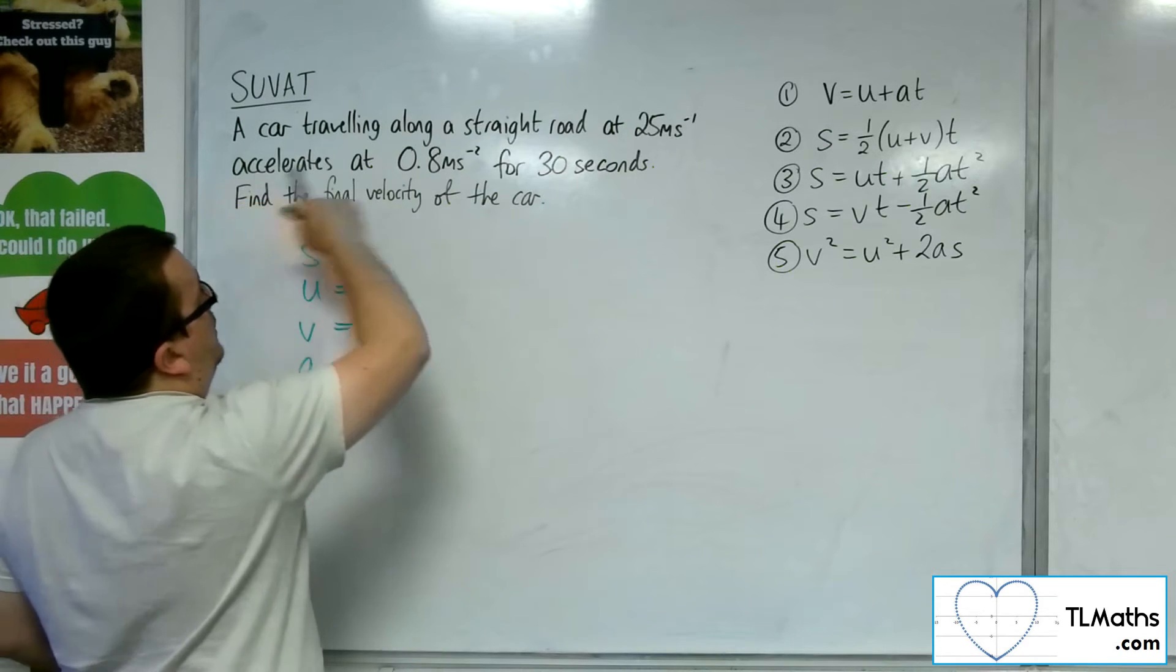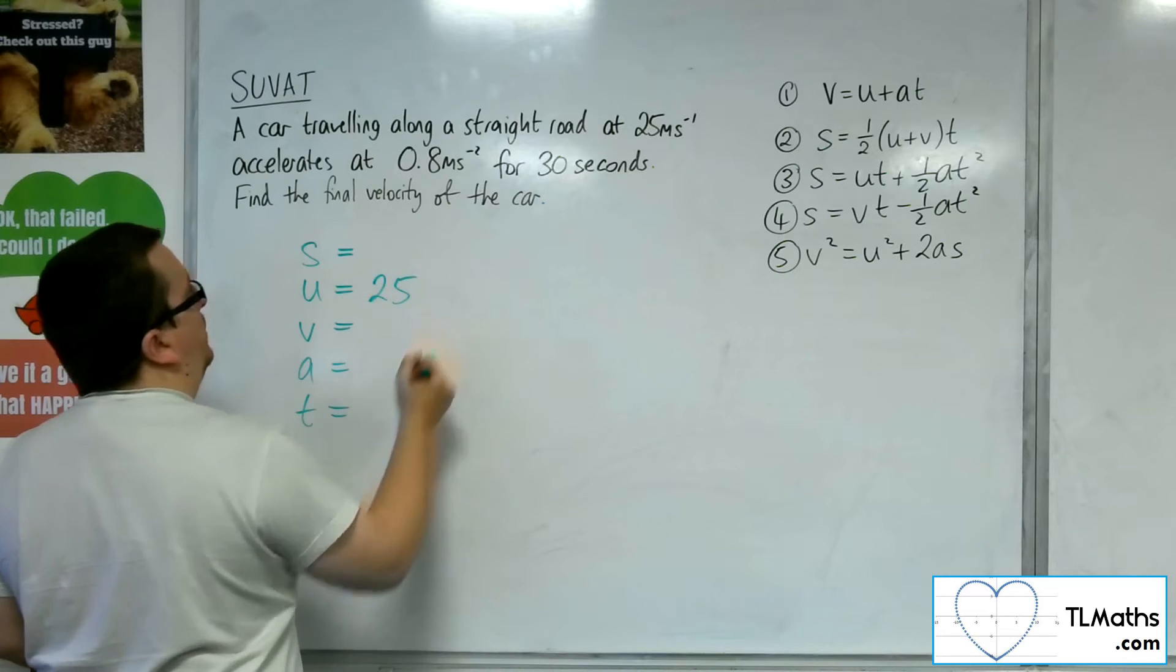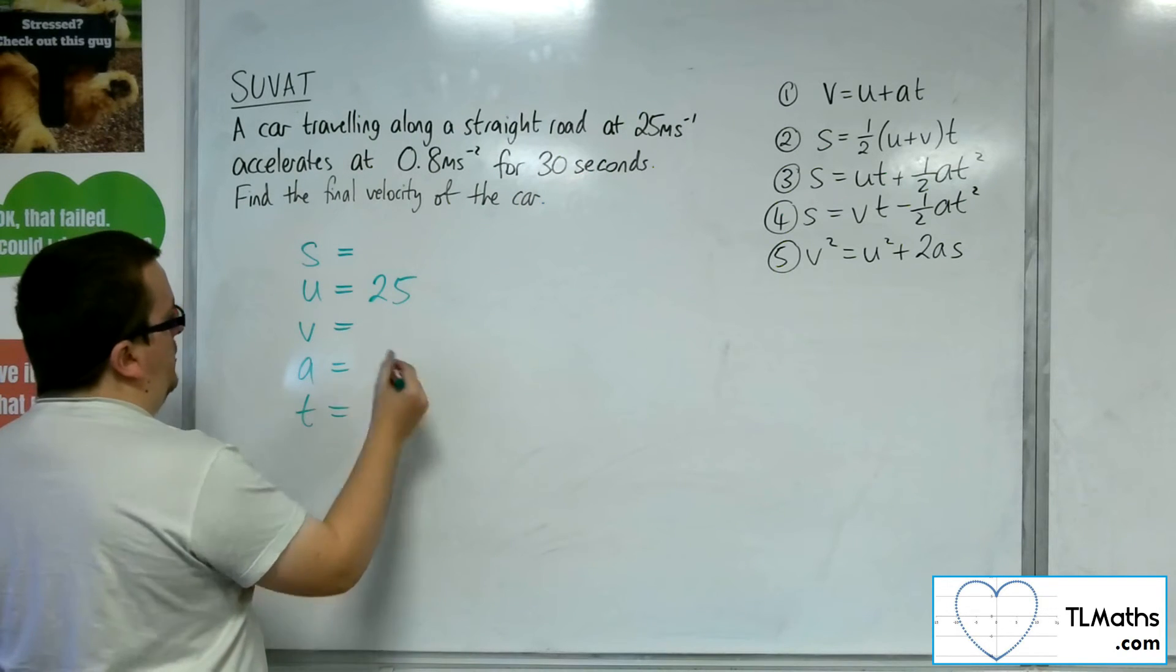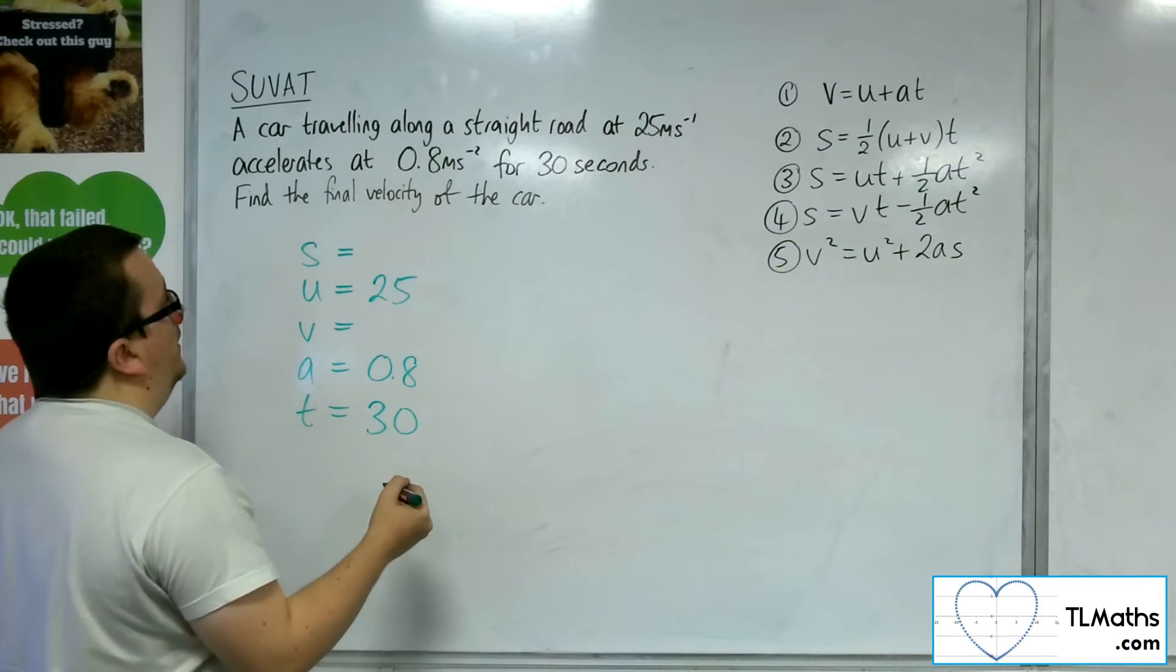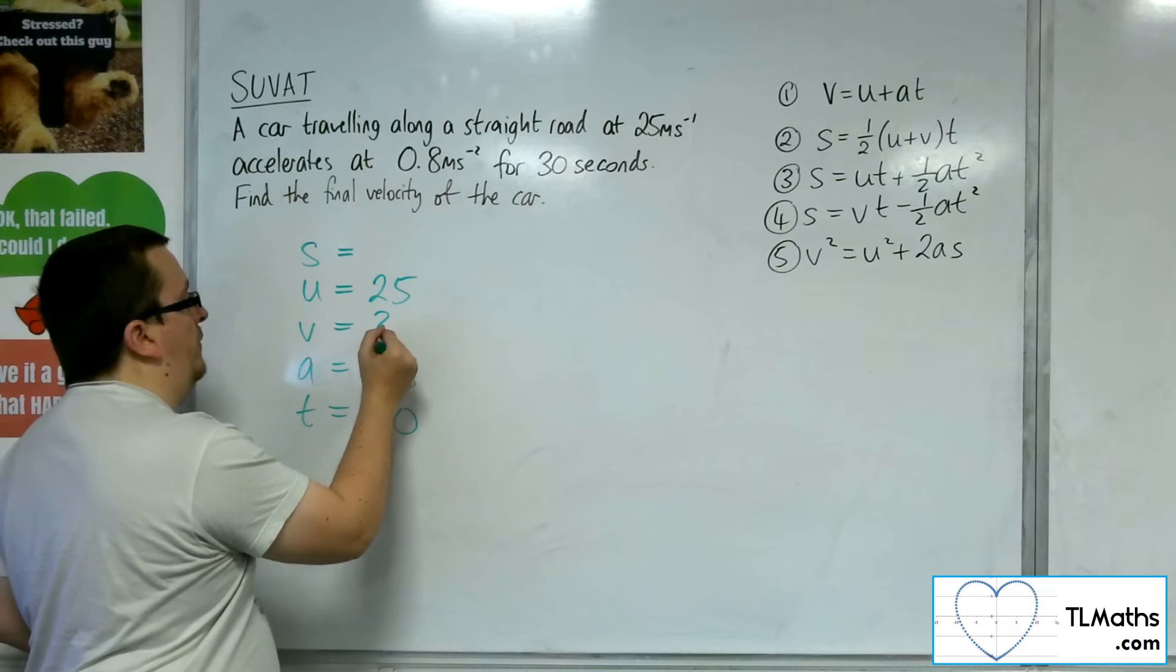So the car's travelling initially at 25 metres per second, and it accelerates at 0.8 metres per second per second for 30 seconds. Find the final velocity of the car.